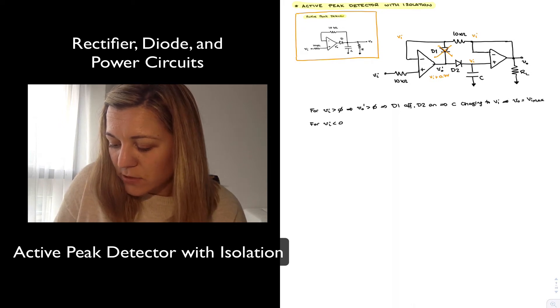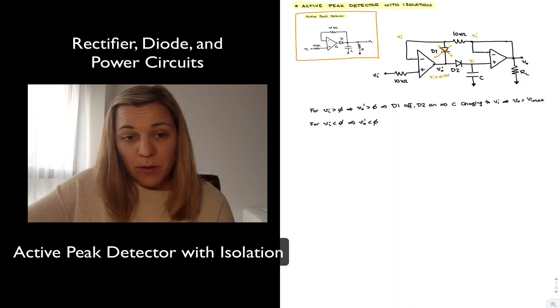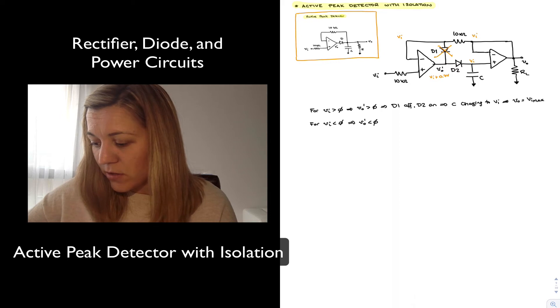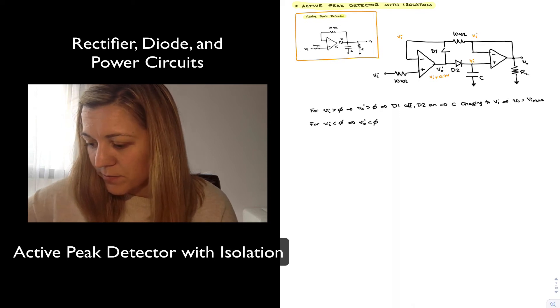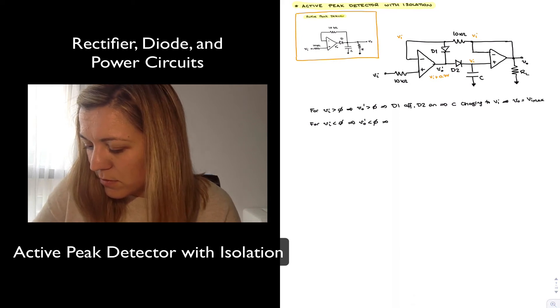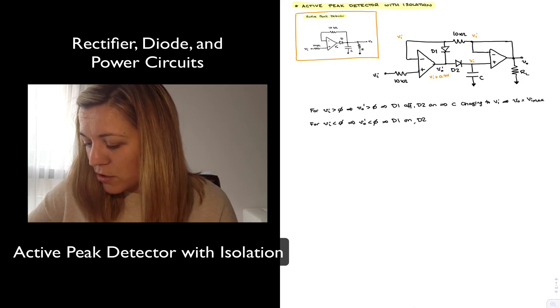For Vin less than 0, negative values of Vin, the output of the op-amp is going to try to go negative and therefore the diode that is going to be forward biased now is going to be D1. So D1 is going to be forward biased, excuse me, D1 is going to be forward biased plus Vout prime is trending negative. D2 is off.